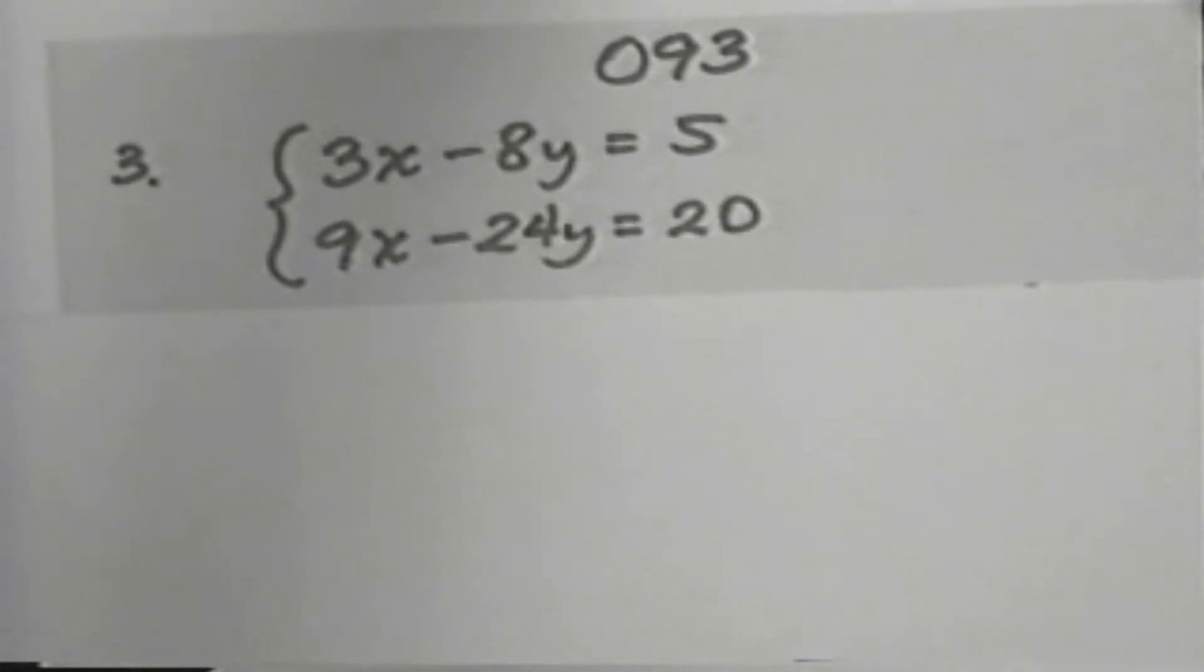Let's multiply one or the other of these equations by something that would get, in effect, a common denominator for the two coefficients of one of the variables. For our first variable x, we have 3 and 9. A common denominator for 3 and 9 would be 9.